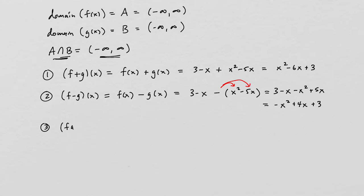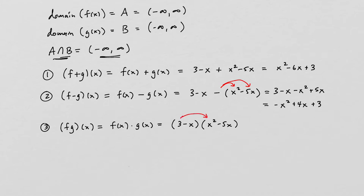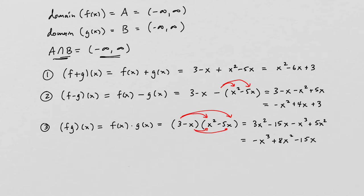Now let's find f times g. f times g of x is f of x multiplied by g of x, so that's 3 minus x multiplied by x squared minus 5x. For this we just FOIL. When we multiply it out we get 3x squared minus 15x minus x cubed plus 5x squared, and combining like terms and reordering gives us negative x cubed plus 8x squared minus 15x. Its domain is all real numbers.